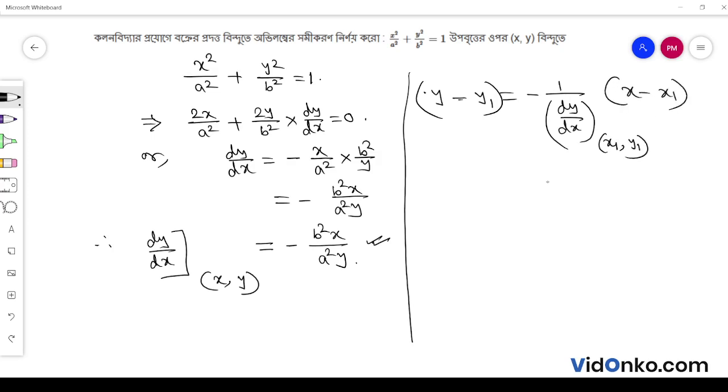We find that y minus y1 is equal to minus 1 by minus b squared x by a squared y into x minus x1.